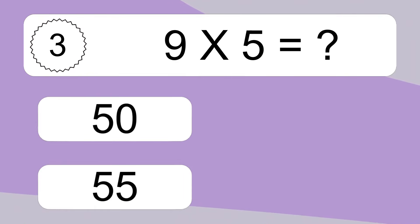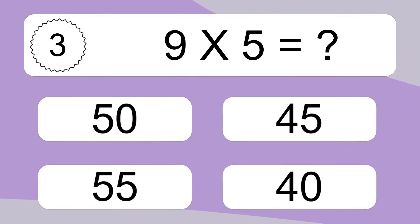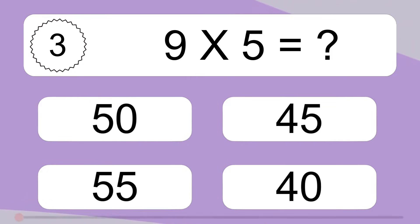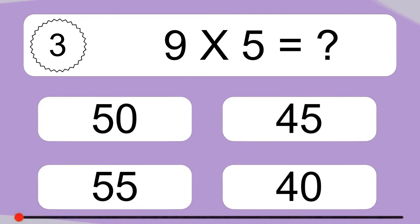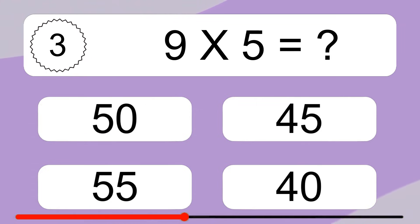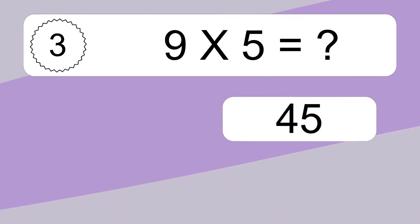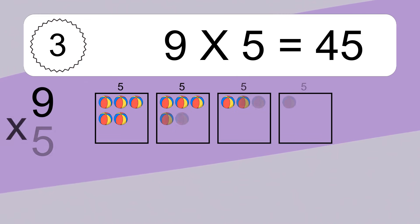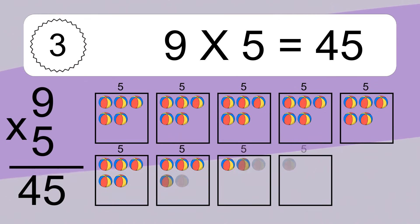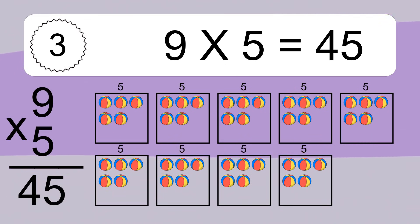9 times 5 equals what? 9 times 5 equals 45.